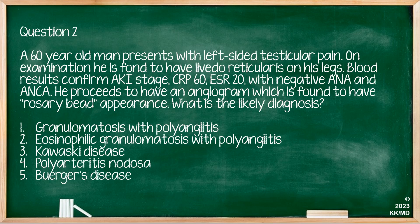Question two: a 60-year-old man presents with left-sided testicular pain. On examination, he is found to have livedo reticularis on his legs. Blood results confirm an AKI stage three, a CRP of 60 and ESR of 20, with negative ANA and ANCA. He proceeds to have an angiogram which is found to have a rosary bead appearance. What is the likely diagnosis? One: GPA. Two: EGPA. Three: Kawasaki disease. Four: PAN. Five: Buerger's disease.